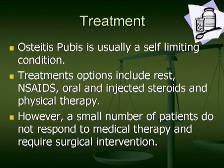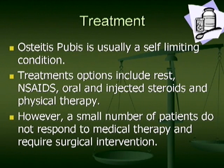Once you've made the diagnosis of osteitis pubis, the good news is that it's usually a self-limiting condition. Treatment options usually include telling the athlete to shut it down, a course of anti-inflammatories, steroid injections, and physical therapy. However, there is a small number of patients that do not respond to conservative measures and require surgical intervention.